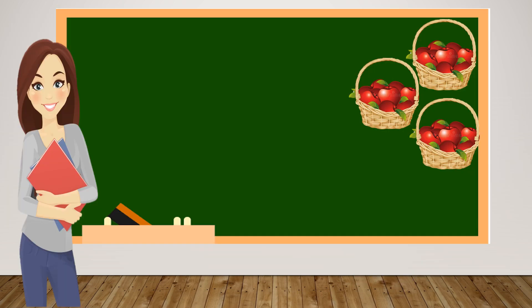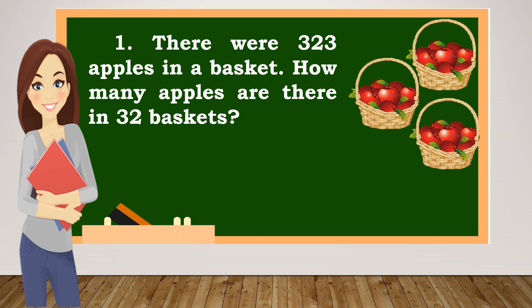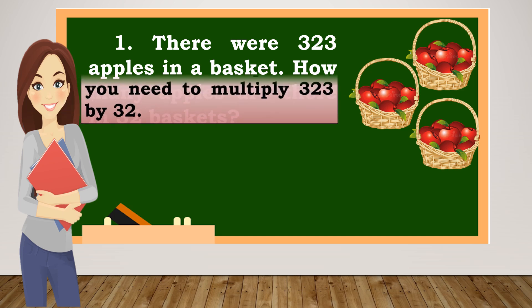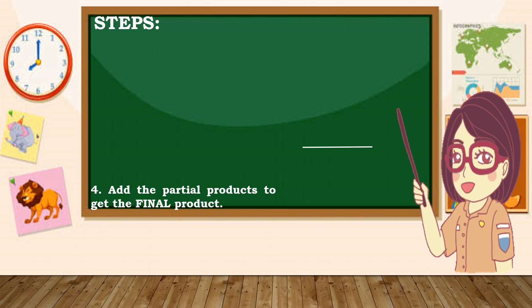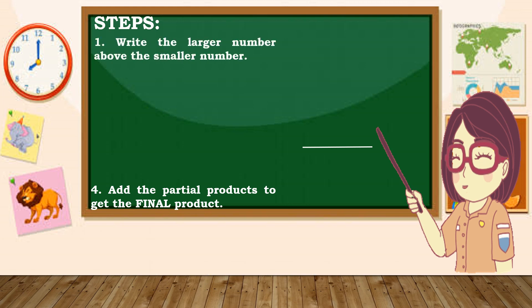Example number one: there were 323 apples in a basket. How many apples are there in 32 baskets? To solve the problem you need to multiply 323 by 32. Step number one: write the larger number above the smaller number. So isusulat natin ang malaking number, which is 323, at isusulat natin sa ibaba nito ang 32. So 323 times 32.